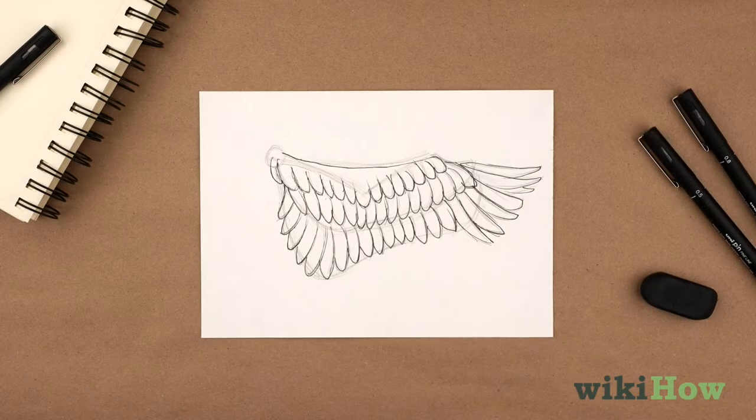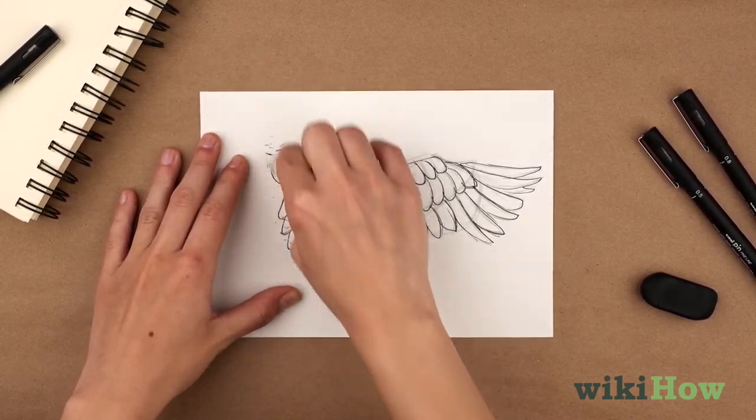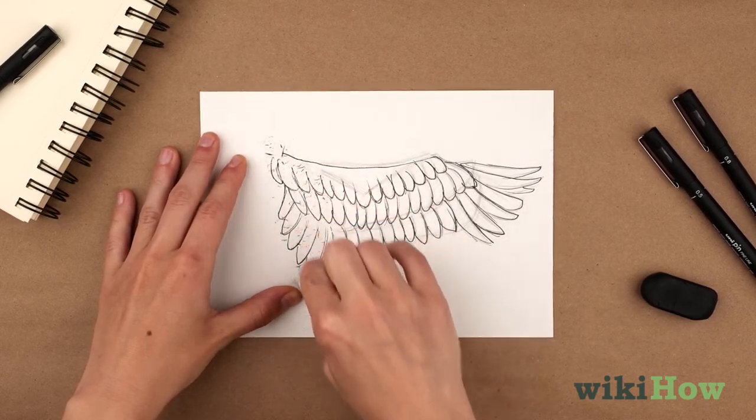When you're done, erase the bone structure sketch and any other guidelines you used, leaving just the feathers behind.